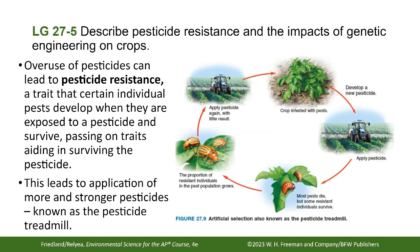Overuse of pesticides can lead to pesticide resistance — a trait that certain individual pests develop when exposed to a pesticide, surviving through a favorable mutation and passing it on. This leads to the pesticide treadmill: you apply a pesticide, a pest with a resistant mutation survives and reproduces, so you apply a stronger pesticide, and eventually resistance builds to that too, requiring ever more powerful treatments.